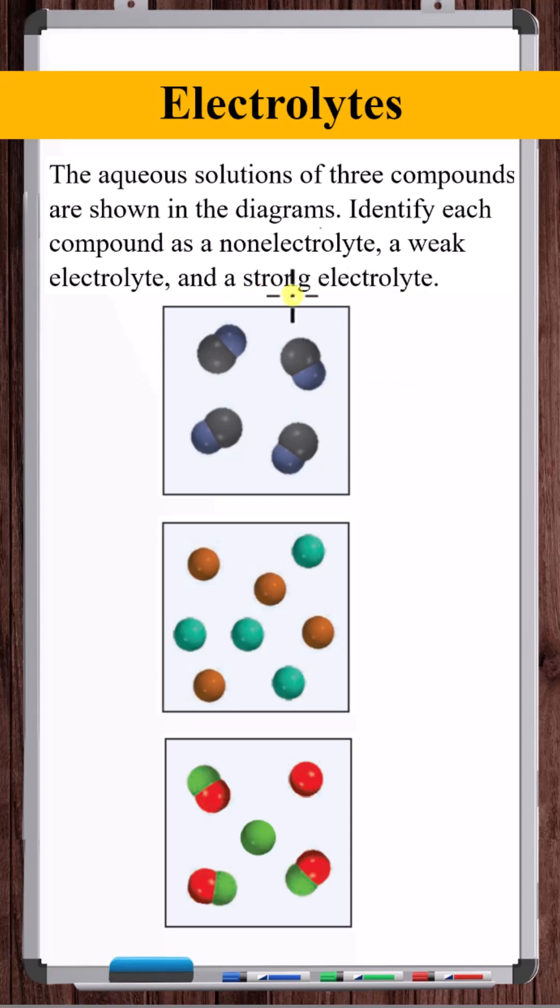The definition of a strong electrolyte is that every mole of the substance dissociates or breaks up into ions. You can see here that every one of these atoms are separated. There's no combined atoms like you see here. So this is fully dissociated. This is a strong electrolyte.